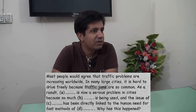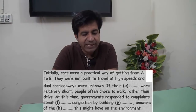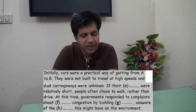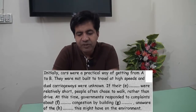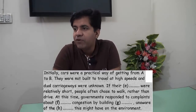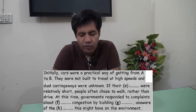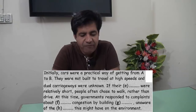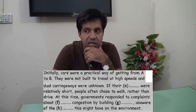We are looking for fast methods of transport — bullet trains and jets, like that. Initially, cars were a practical way of getting from A to B. They were not built to travel at high speeds and dual carriageways were unknown. If their journeys were relatively short, people often chose to walk rather than drive. At this time governments responded to complaints about traffic congestion by building new roads.